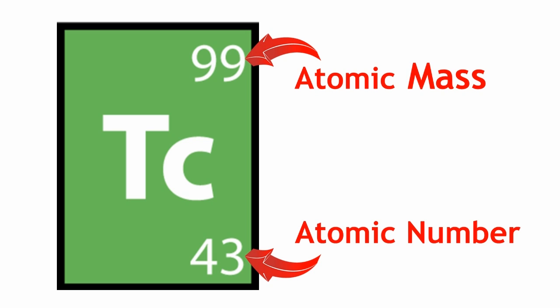These are different because the atomic mass is the total mass of the atom determined by its number of protons and neutrons, whereas the atomic number is the number of protons in the atom.